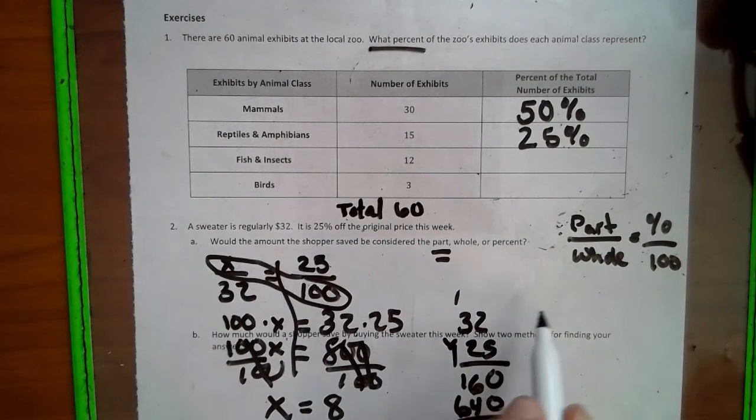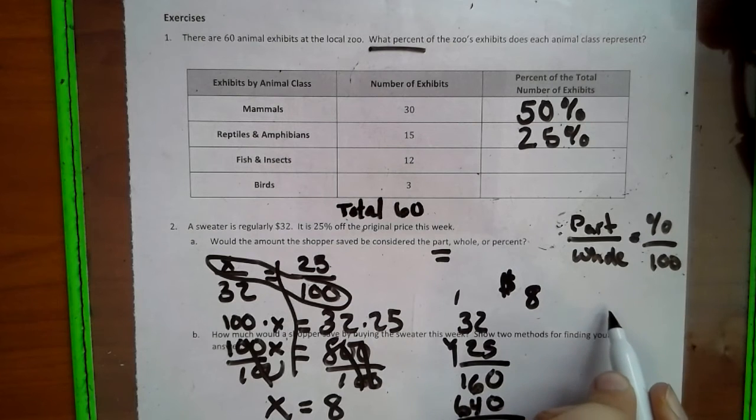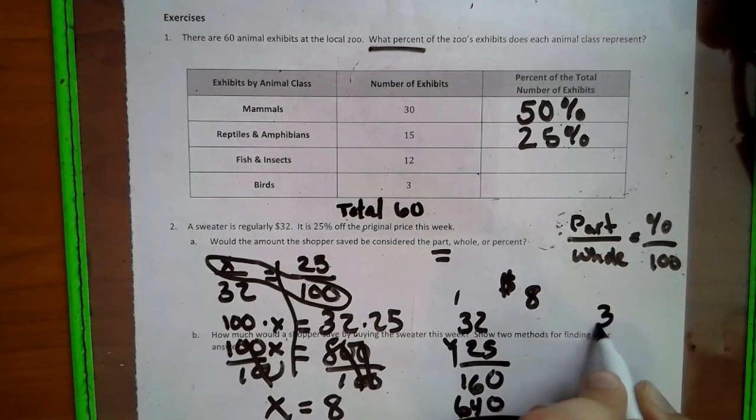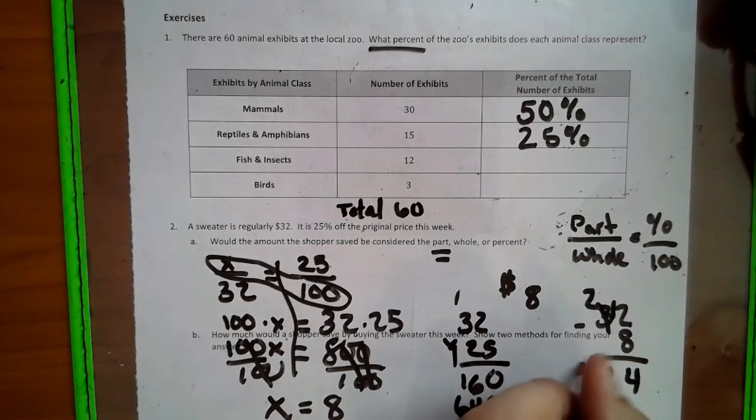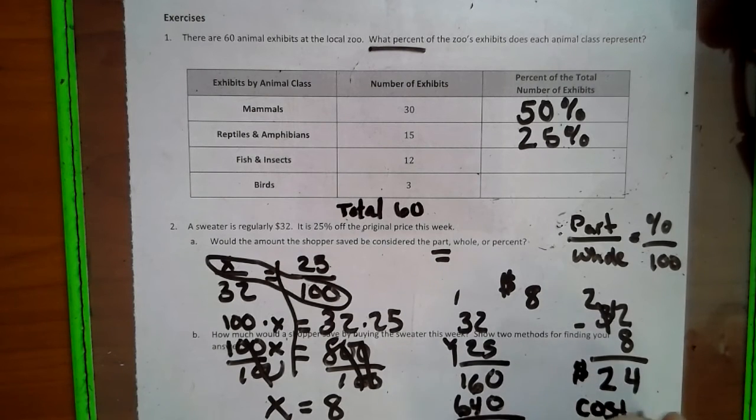So what you're saving is $8. So the cost that you pay for the sweater is $32 minus the $8. $24 is the cost of the sweater.